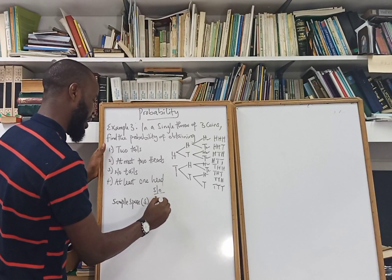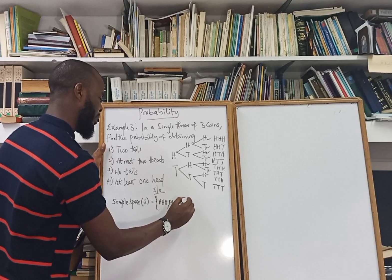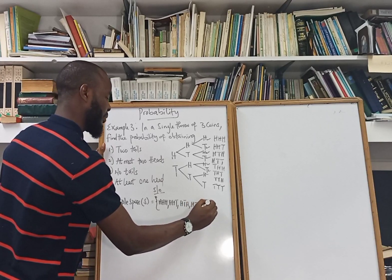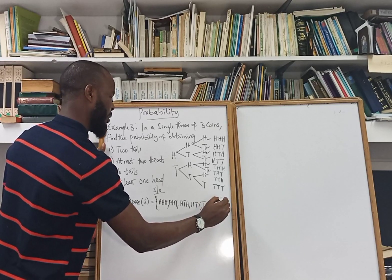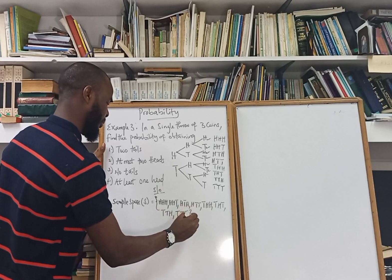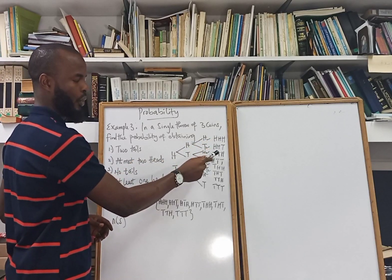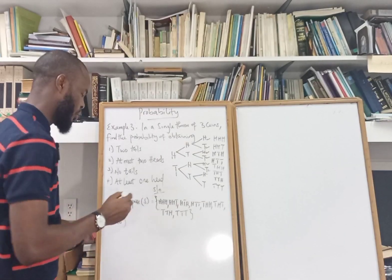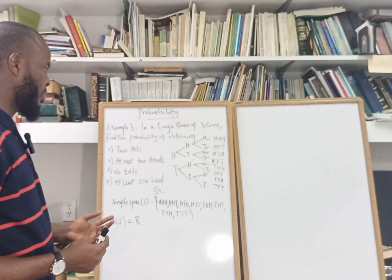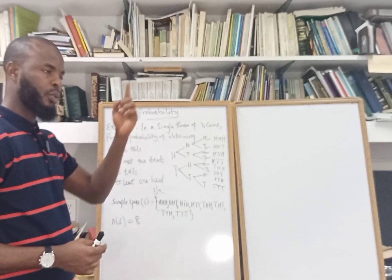So if you want to know the cardinality of your sample space, how many do we have? We have 1, 2, 3, 4, 5, 6, 7, 8. So the total of your sample space is 8. And another way to know it's going to be 8 is that for a single throw we have 2 outcomes, and we throw 3 coins, so 2 raised to the power 3 gives 8. We call it the power of the set.